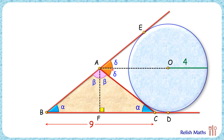Now let's join OD. OD is the radius and thus it's 4 centimeters. We know that the radius is perpendicular to the tangent, and thus this angle D here will be 90 degrees. In figure AODF, all the angles are 90 degrees, and thus it's a rectangle. If OD is 4 centimeters, then AF will also be 4 centimeters.